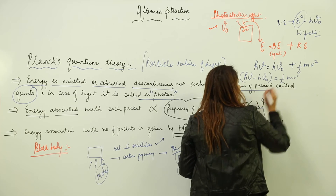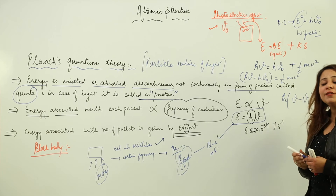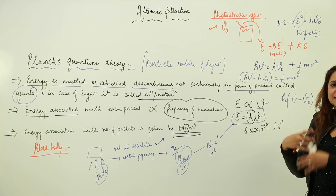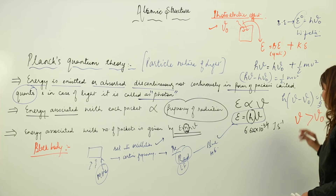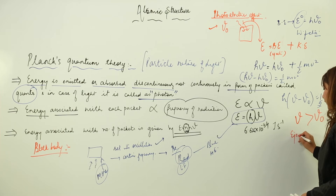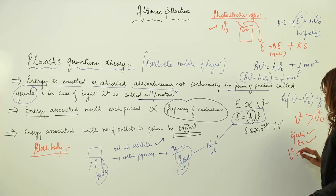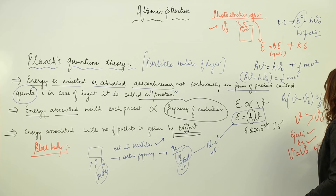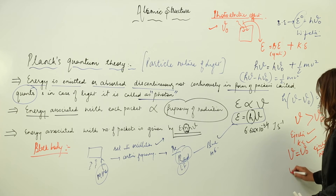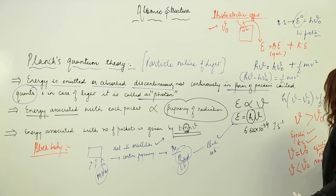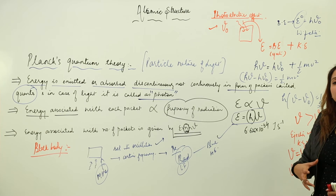We can write: hν − hν₀ = ½mv², or h(ν − ν₀) = ½mv². Now, whether ejection will occur and whether the electron will have kinetic energy depends on the value of ν. When ν > ν₀, ejection occurs and the electron has kinetic energy. When ν = ν₀, ejection takes place but no kinetic energy is imparted to the electron. When ν < ν₀, there is no ejection and no kinetic energy.